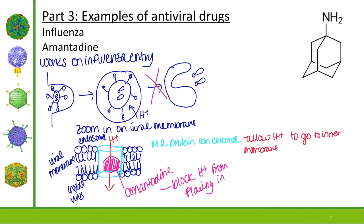Amantadine is still FDA approved, but we don't use it as often as other antivirals against flu. Part of the reason is resistance — amino acid changes lining the inner channel make it so amantadine no longer sticks there, allowing protons to flow right in. Another reason for widespread resistance is pig farmers: farmers noticed pigs given amantadine grow bigger, so they continued feeding antivirals to pigs, leading to significant resistance to this drug.